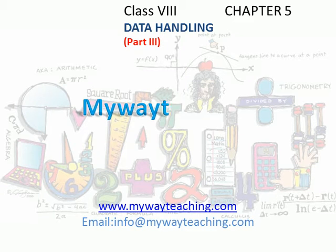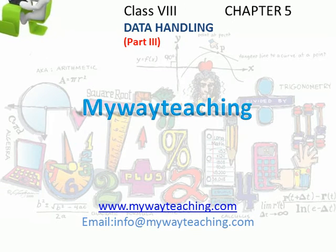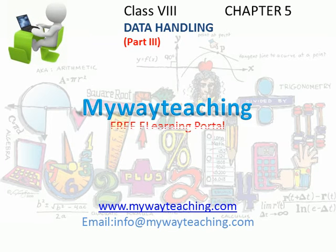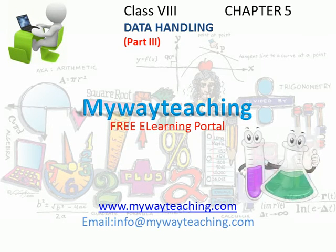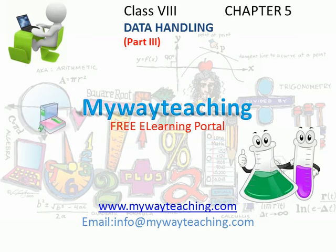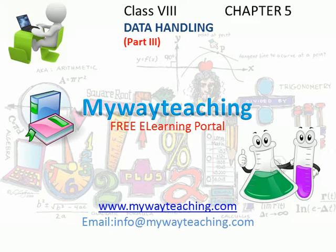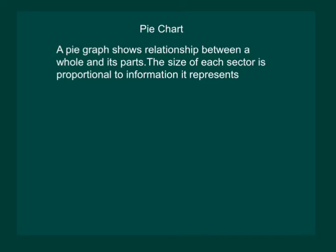Hello friends, this video is brought to you by mywayteaching.com. Pie chart — a pie graph shows the relationship between a whole and its parts. The size of each sector is proportional to the information it represents.